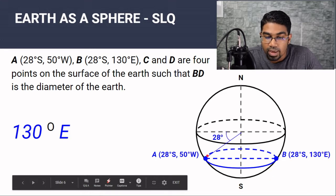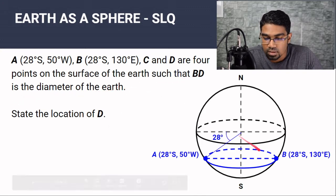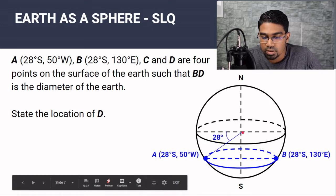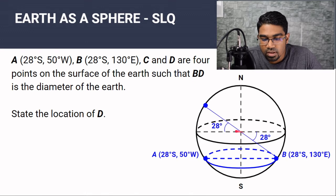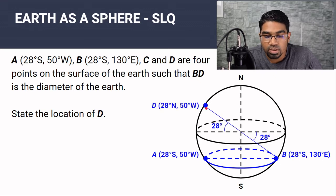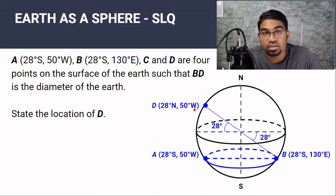The first question is to state the location of D. We are given that BD is the diameter of the Earth. The line BD must pass through the center of the Earth, so let's draw that diameter — D lies on the other side. Since B is at 28 degrees south, this angle is 28 degrees, and by symmetry D is also 28 degrees — but now in the northern hemisphere. So the latitude of D is 28 degrees north, and it lies on the same longitude as B, so D is at 28 degrees north, 130 degrees east.